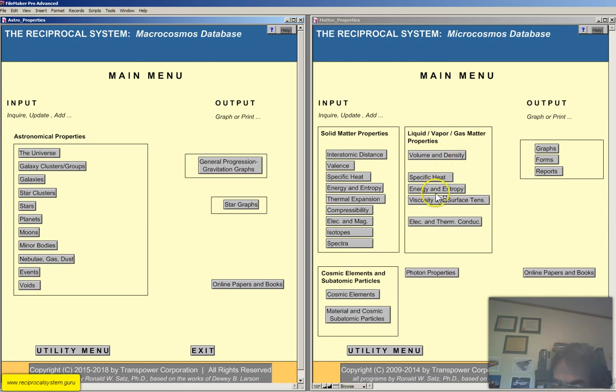Yes, spectra. We don't have jumping electrons in the reciprocal system. We have changes in the thermal motion and ionization level of atoms. That's what really causes spectra. We have liquid vapor gas matter properties, volume and density, specific heat, energy and entropy, viscosity and surface tension, and electrical and thermal conductivity. We also cover cosmic elements, subatomic particles, and that includes material and cosmic subatomic particles. The cosmic particles are what conventional physicists call the mesons. The cosmic elements have the inverse mass to their corresponding material elements or ordinary elements. That's why they have a mass normally in the range of deuterium all the way down to just small multiples of the electron mass, charged electron mass. And of course, you have photon properties. This module also has a fine graphics program as well.